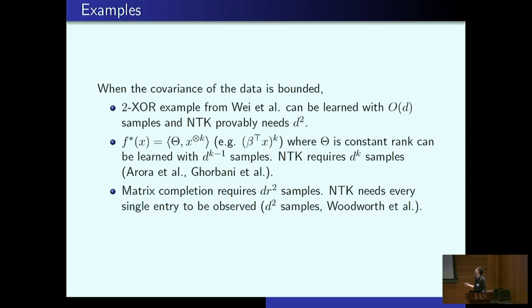For matrix completion, a similar thing. So matrix completion needs d r squared samples using this model, and NTK actually needs every single sample to be observed. So NTK does something particularly crazy on matrix completion in that the kernel becomes very very degenerate. I think Nati will talk about this. And then you need to essentially see every single entry in matrix. If you apply the NTK method to matrix completion, you need to see every single entry to generalize, and here you need essentially kind of close to the information theoretic thing. You need d r squared.